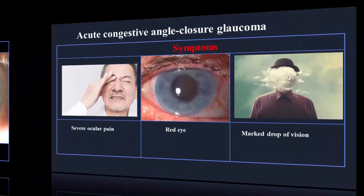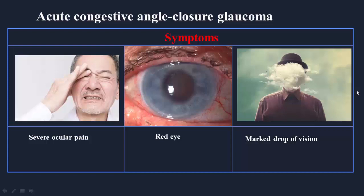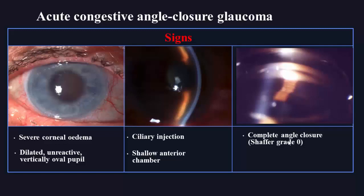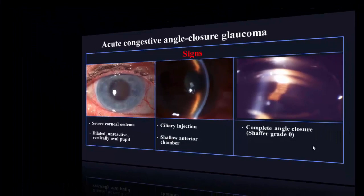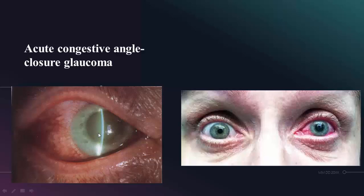If the attack of intermittent angle closure glaucoma does not resolve, the patient will pass into acute congestive angle closure glaucoma with high rise of IOP and no improvement of aqueous drainage. The main complaints are severe ocular and peri-ocular pain and headache. The second symptom is red eye, and the third is a marked drop of vision. On examination, signs include severe corneal edema due to very high IOP, a dilated fixed vertically oval pupil, shallow anterior chamber with ciliary injection. Gonioscopy reveals complete angle closure. A photo demonstrates severe corneal edema, ciliary injection, and a mid-dilated fixed pupil caused by acute congestive glaucoma.